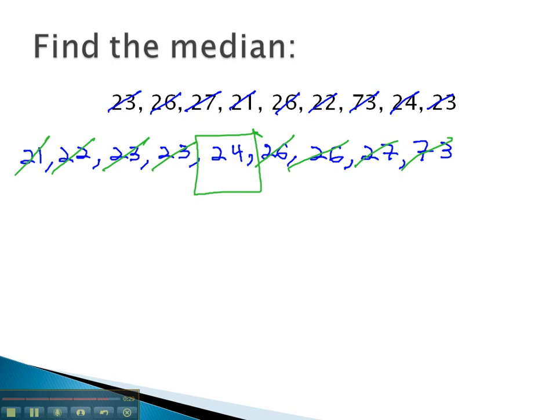The way we find this median is we put the numbers in order and always select the middle number. If there are two middle numbers, we select the average or mean of the two middle numbers.